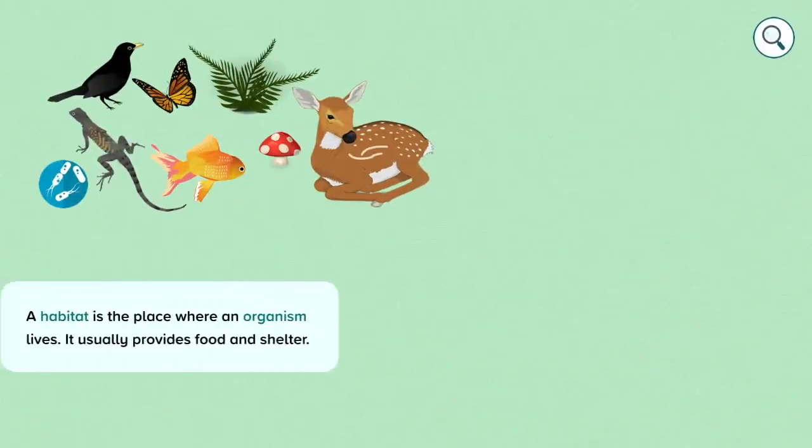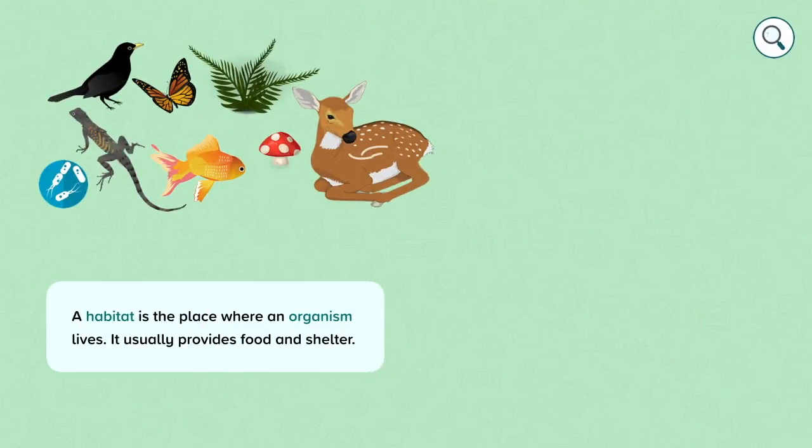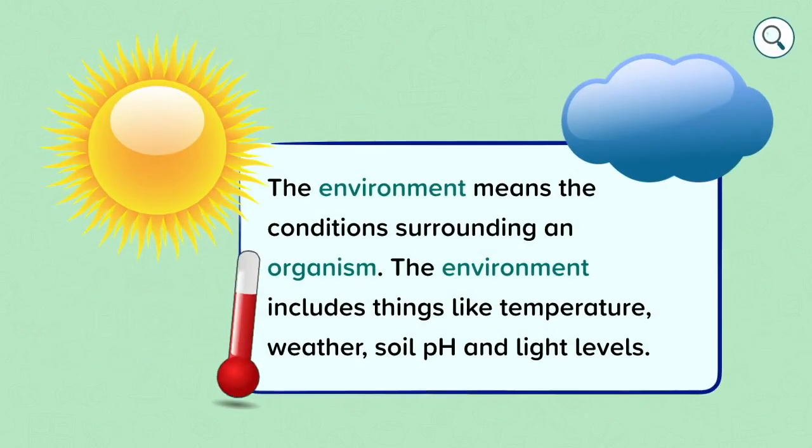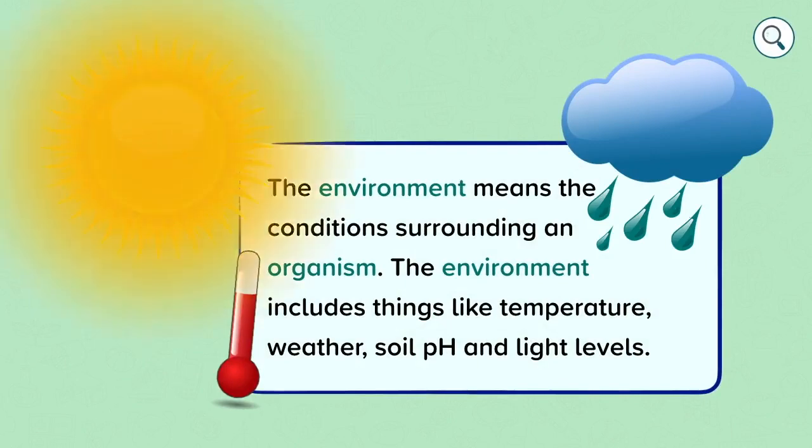A habitat is the place where an organism lives. It usually provides food and shelter. An organism is a living thing. The environment means the conditions surrounding an organism. The environment includes things like temperature, weather, soil pH and light levels.